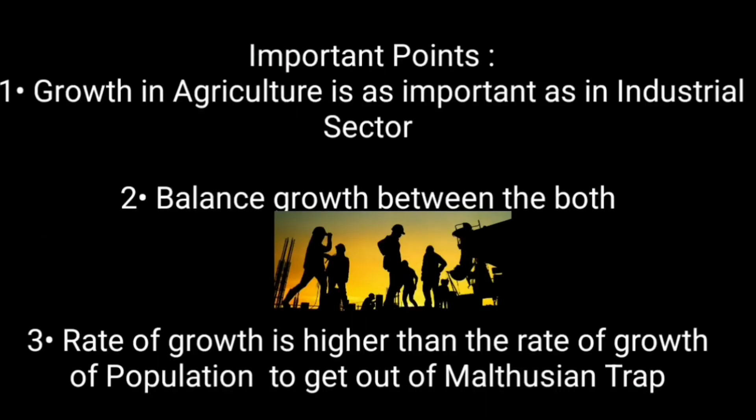Before concluding the Fei-Ranis model, these are the important points you must remember. Number one, the growth in the agriculture sector is as important as in the industrial sector. Second, this model talks about balanced growth between both sectors. And lastly, the rate of growth must be higher than the rate of growth of population to get out of the Malthusian trap.